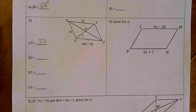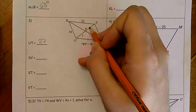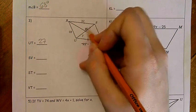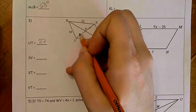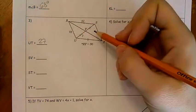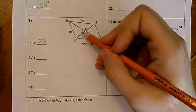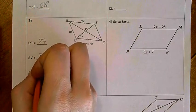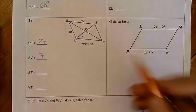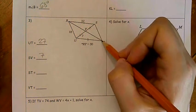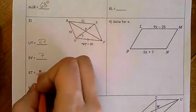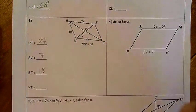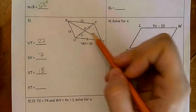The next thing we're looking for is SV, this little section right here, and we know UV is 7. Remember, diagonals bisect each other. That means UV is congruent to SV, so SV is also 7. ST, that's this whole side length here, it's opposite RU. RU is 18, ST is 18.